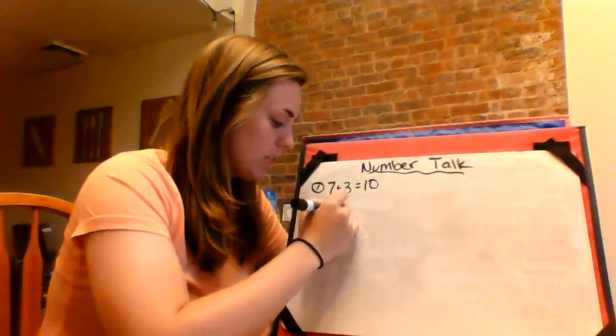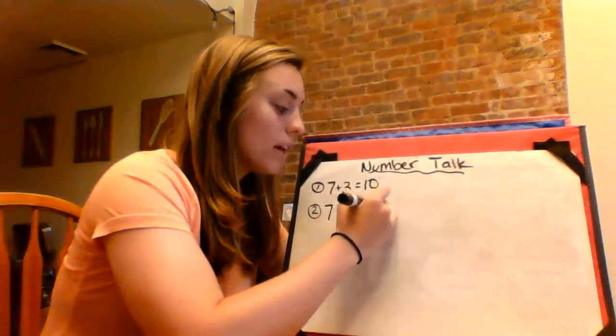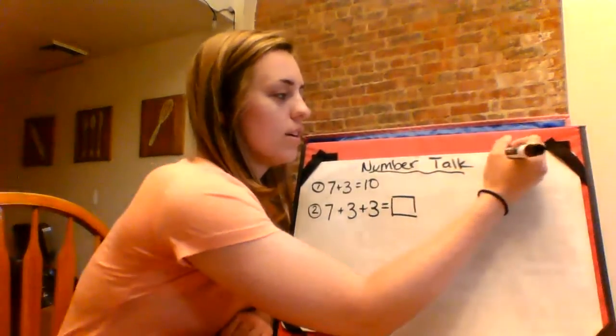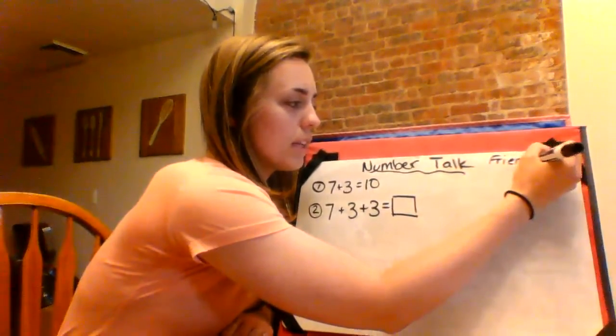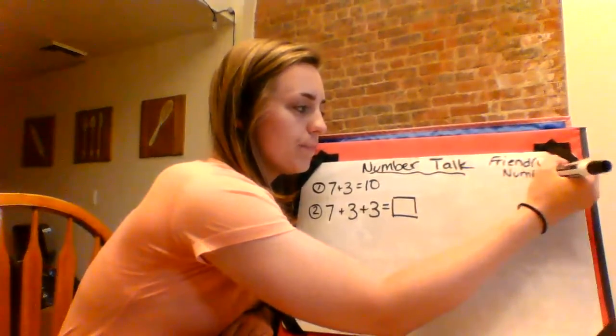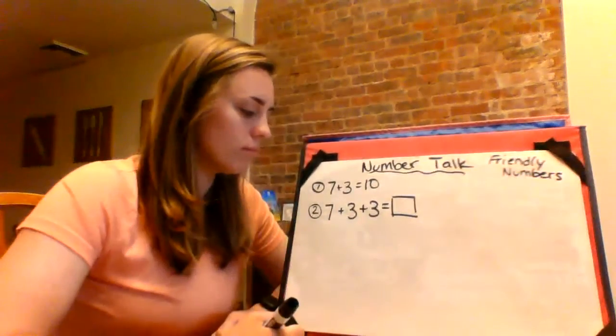Number two. Seven plus three plus three. You got this one. I'll give you a few seconds. Remember guys, we're looking to make friendly numbers, something that will help us solve this super fast, right?